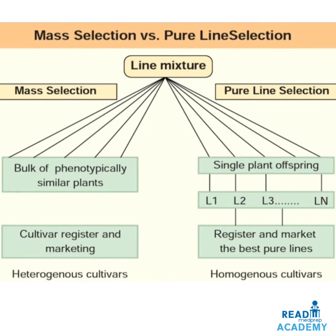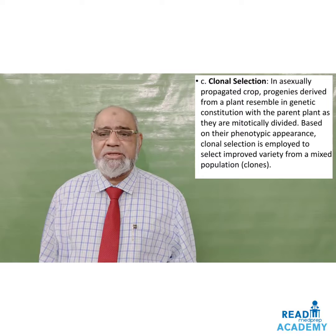In mass selection versus pure line selection: in mass selection, a bulk of phenotypically similar plants are produced and the cultivar is registered and marketed — all cultivars are heterogeneous. In pure line selection, a single plant offspring is propagated as lines L1, L2, L3 through Ln, and is registered and marketed as the best pure lines — the cultivars are homogeneous.